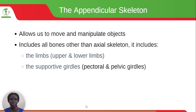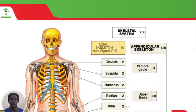The appendicular skeleton allows us to move and manipulate objects, and includes all bones other than the axial skeleton. It includes the limbs — upper and lower limbs — and the supportive girdles, which are the pectoral and the pelvic girdles. A picture shows which part is the axial skeleton and which is the appendicular skeleton.